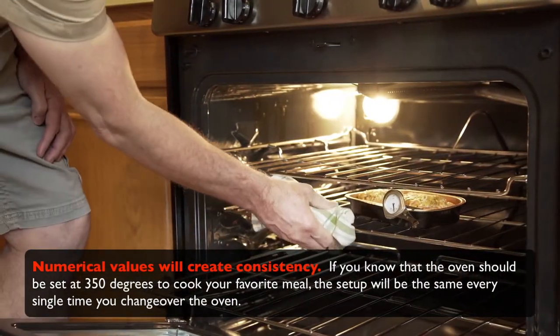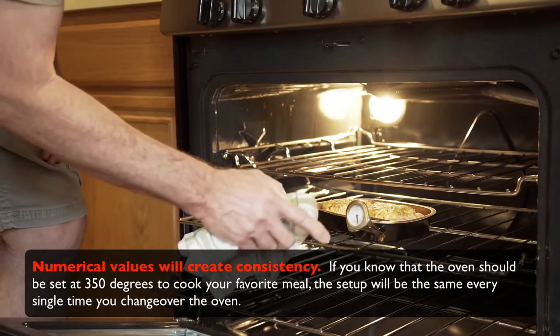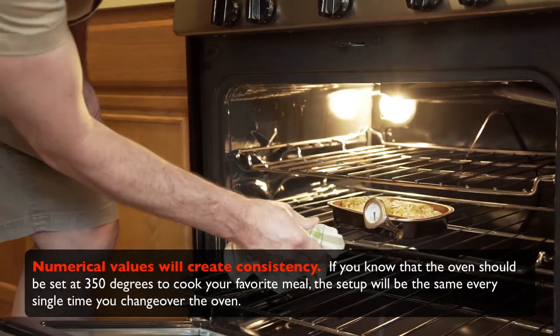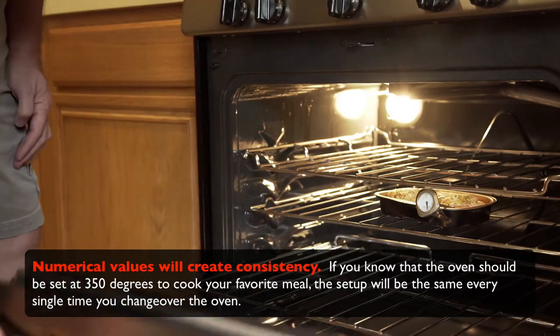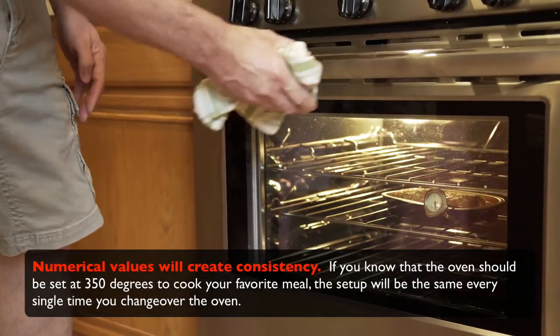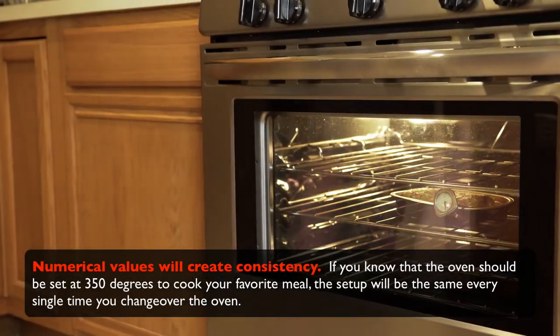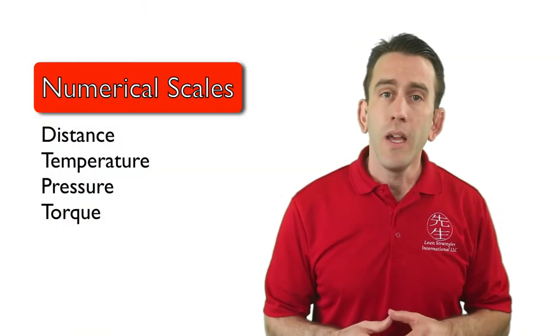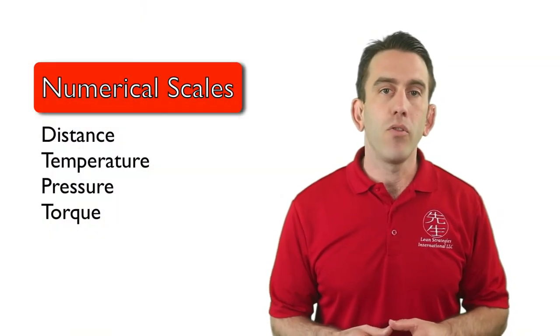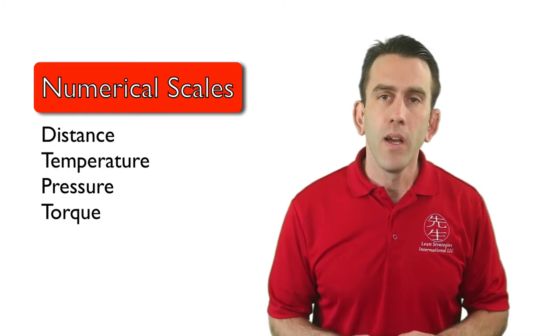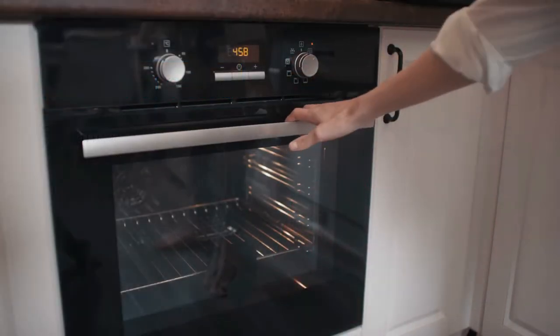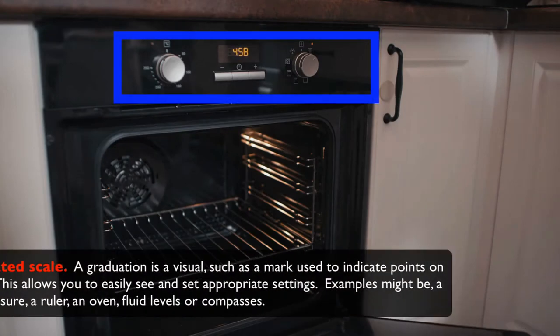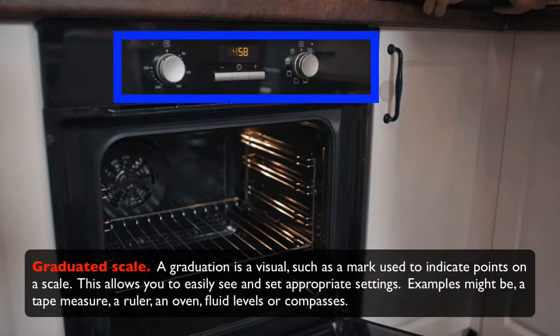If you know that the oven should be set at 350 degrees to cook your favorite meal, the setup will be the same every single time you change over the oven. Whether it is distance, temperature, pressure, or torque, you need to standardize your numerical settings. To start, be sure that the settings are visible. This is often referred to as a